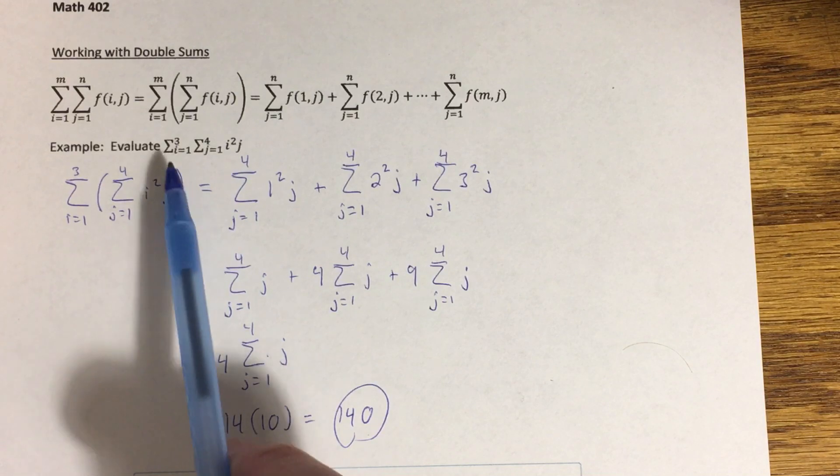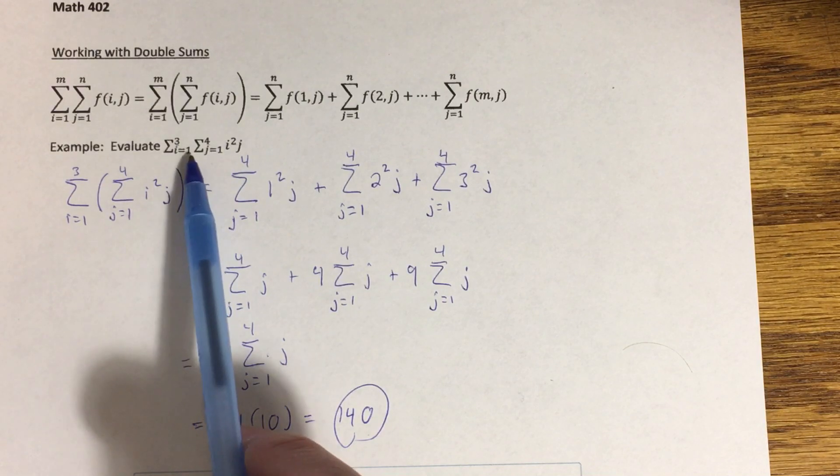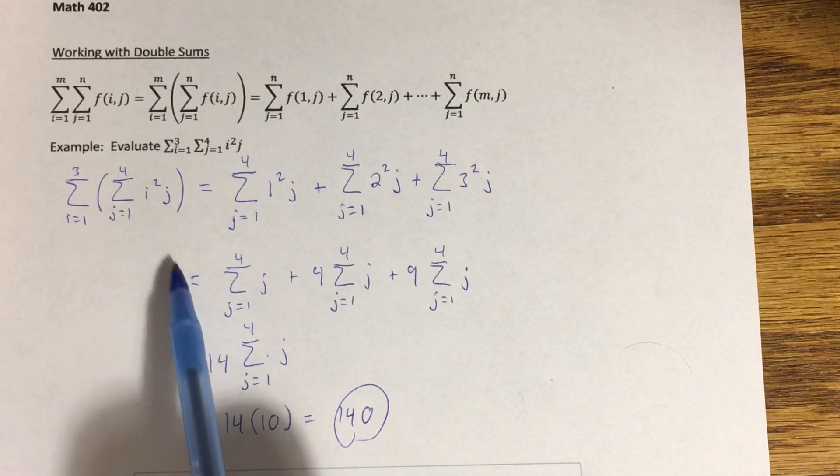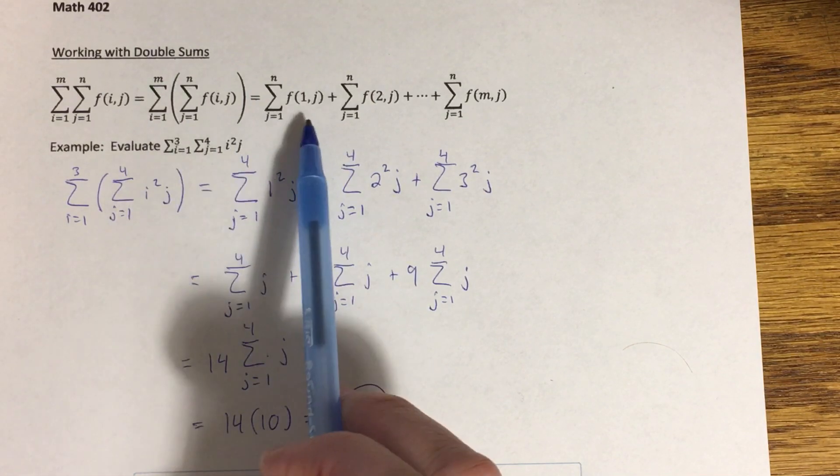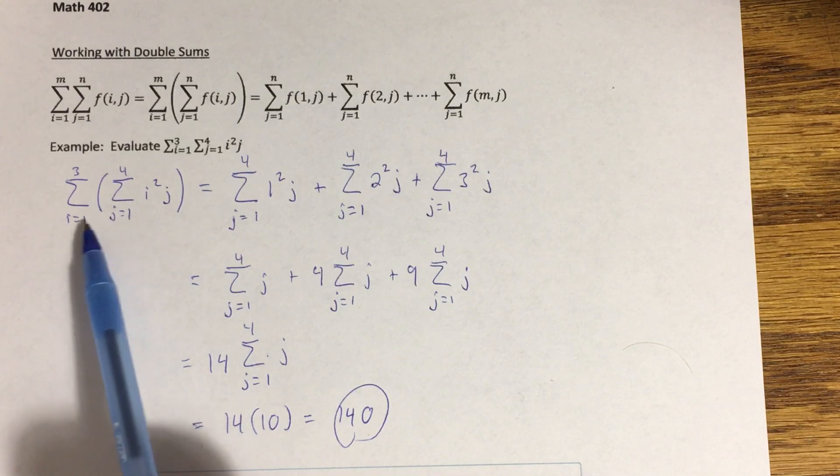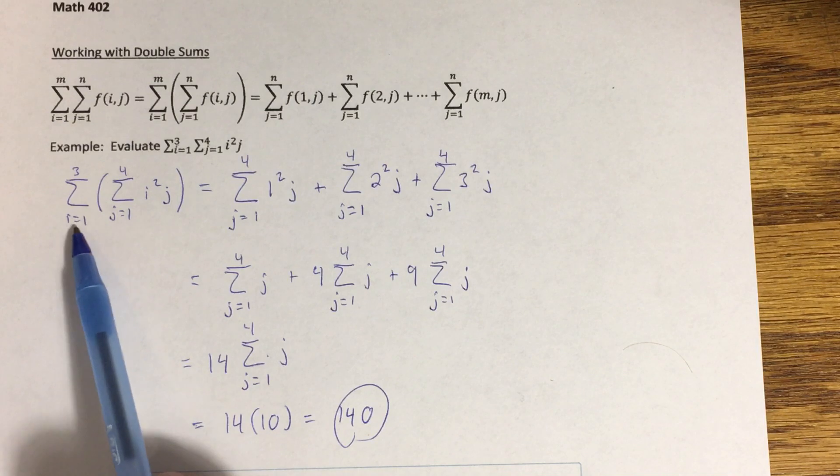We're doing a double sum. The function that's showing up in here is i squared j, and the i's we're summing from one to three, the j's from one to four. So using this as a guide up here, I'm going to put the innermost sum in parentheses first, j equals one to four, and then the outermost sum, the i equals one to three.